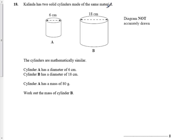Kalenda has two solid cylinders made of the same material. Those cylinders are mathematically similar. Now that's an important point. That means that one is enlarged with the other and it follows a certain rule.